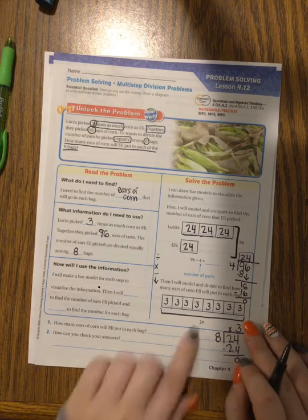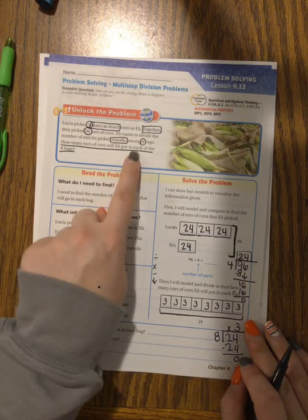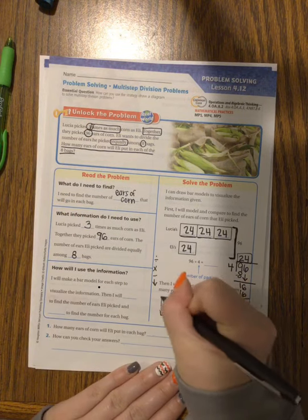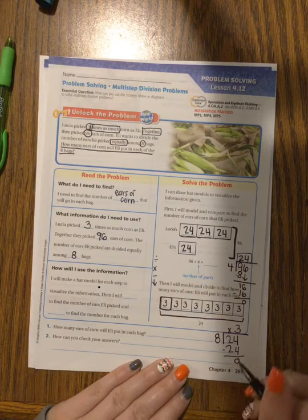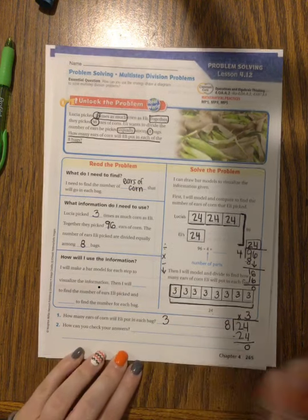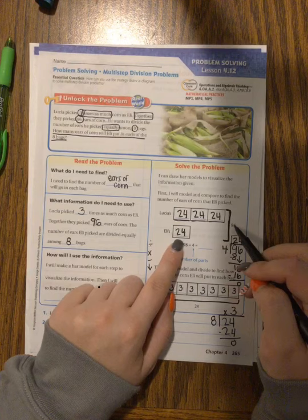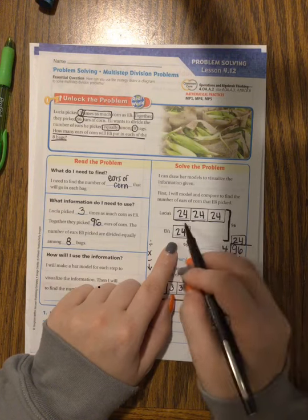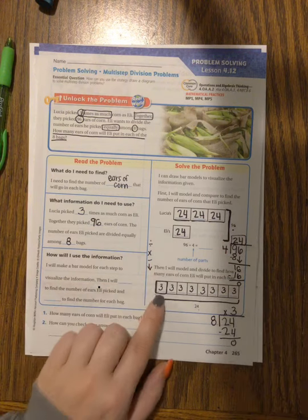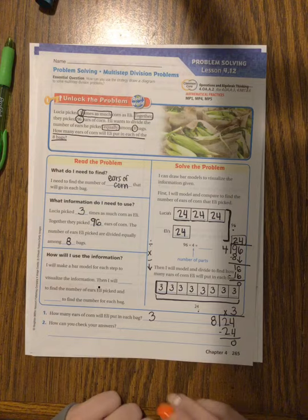Now once I've done my math I always have to come back to the question: did I really answer what I was supposed to? It says how many ears of corn will Eli put in each of the eight bags. Well all together he's going to put 24 ears of corn but in each bag he's going to put three ears of corn. So how many ears of corn will you put in a bag? Three. How can I check my answer? Well I can first of all to check if I got 24 correct I could do 24 times 4 and see if I get 96 or I could add those all up. They should equal 96. Then I could see if three times eight really does give me 24 and that's how I can check my work. Have a wonderful day guys. See you later.